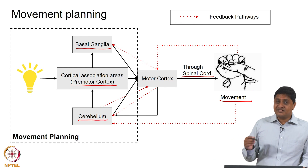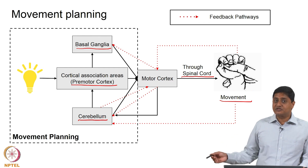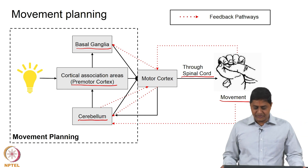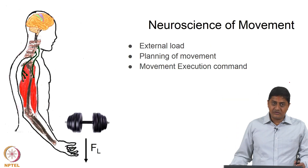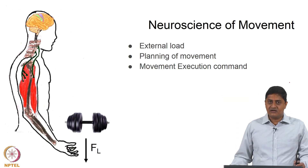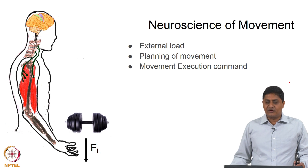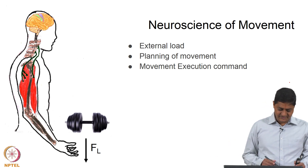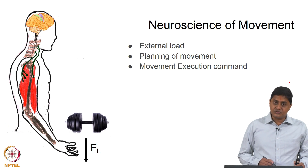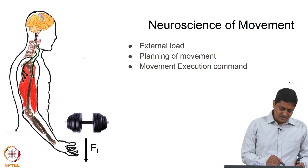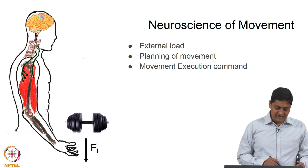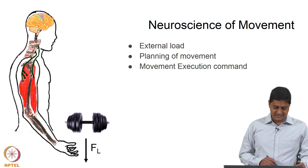Note that cerebellum and basal ganglia do not directly project to the spinal cord — an important point to note. Let us go back to the case of performing bicep curls or lifting the dumbbell. In this case, at least two muscles are responsible for producing these movements, and neurons from the spinal cord innervate these muscles.